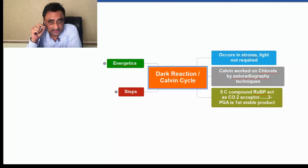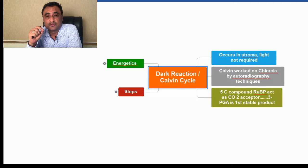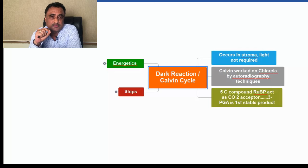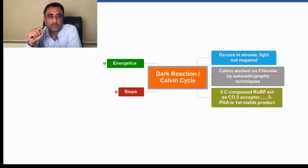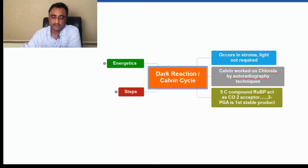One of the most important enzymes present for this entire dark reaction is RUBP carboxylase, which fixes atmospheric CO2. As a result, a 6-carbon unstable compound is formed.